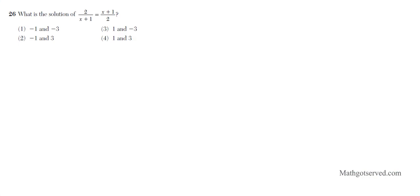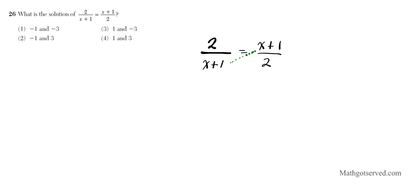Question 26 says: what is the solution of 2 over (x+1) equals (x+1) over 2? We can solve this by eliminating the denominators. One easy strategy to use here is to cross multiply — the denominator gets multiplied by the numerator on the other side of the equation. The bottom left gets multiplied with the top right, and the bottom right gets multiplied with the top left.